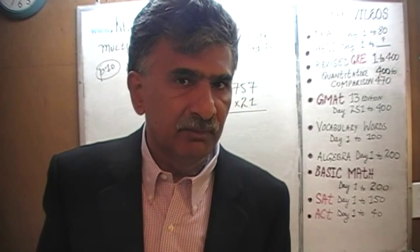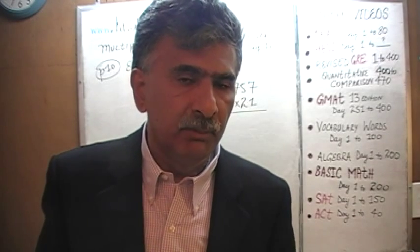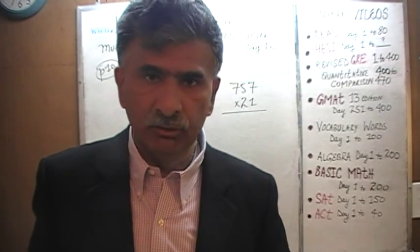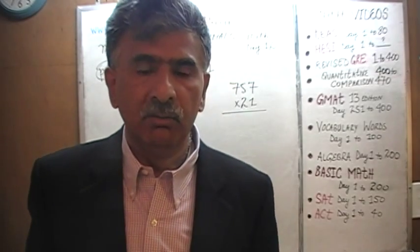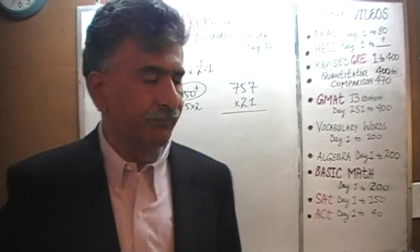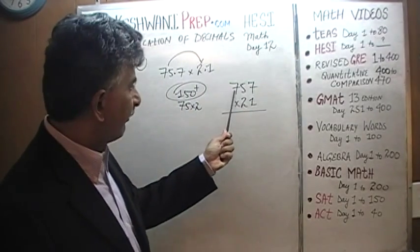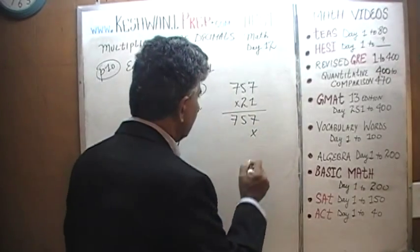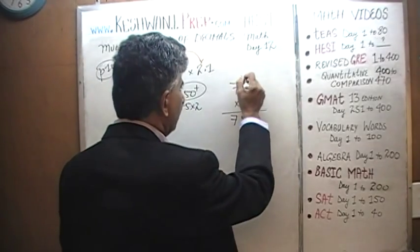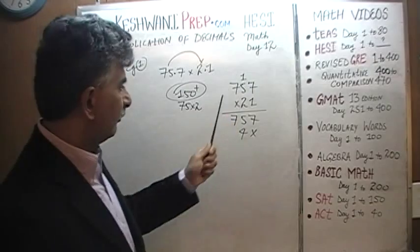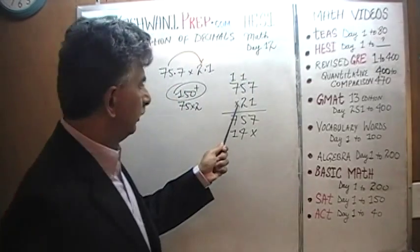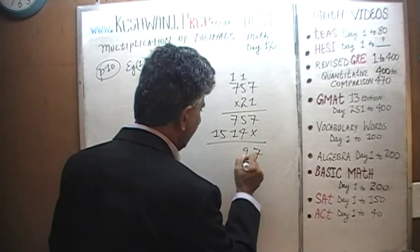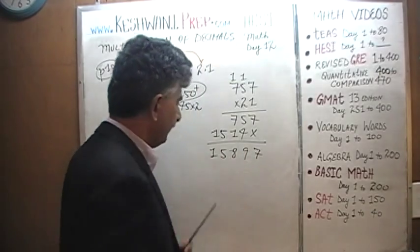In the event that you end up making a careless mistake placing your decimal point, knowing you're looking for something more than 150 will alert you that something has gone wrong — it should not be 1500, it should not be 15, it should be about 150. Multiplying by 1: 1 times 757 is 757. Moving to the tens digit: 2 sevens are 14, carry 1; 2 fives are 10 plus 1 is 11, carry 1; 2 sevens are 14 plus 1 is 15. The result is 15,897.